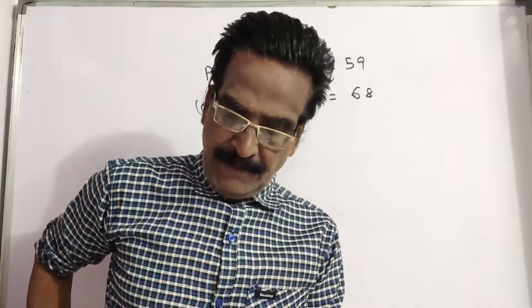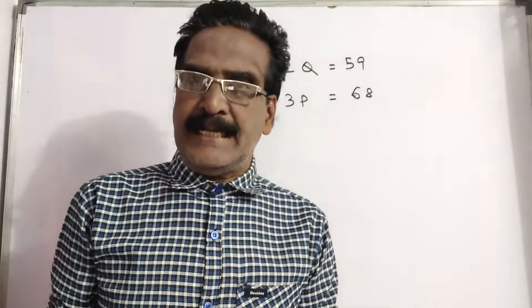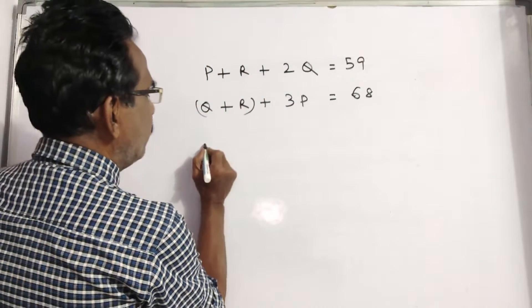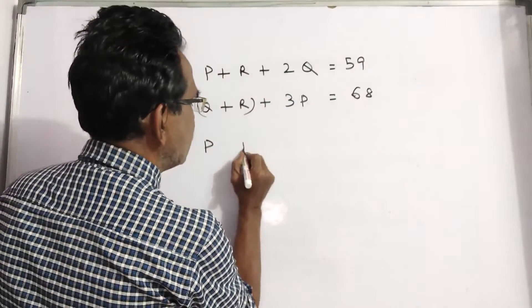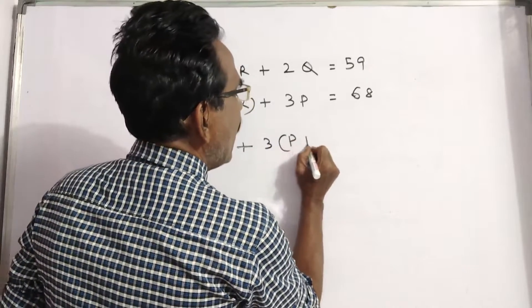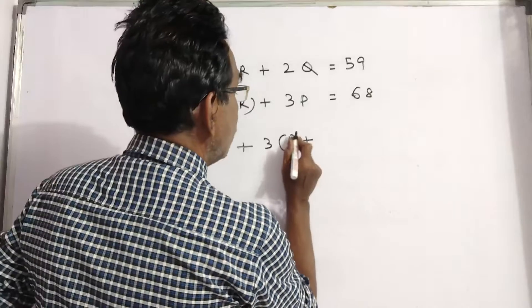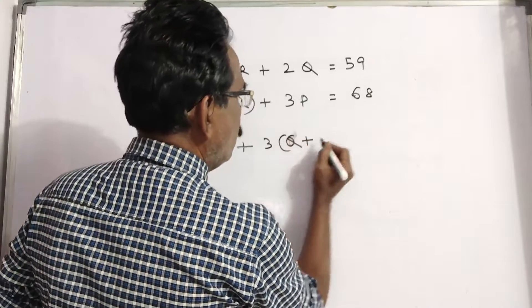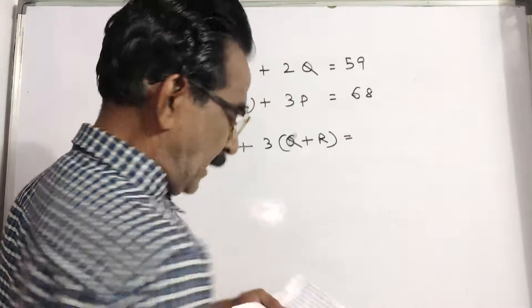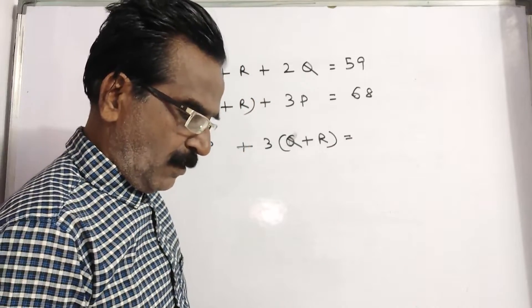Then if the age of P is added to twice the age of Q and twice the age of R, then the sum becomes 108.